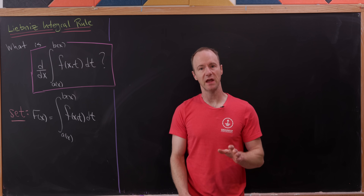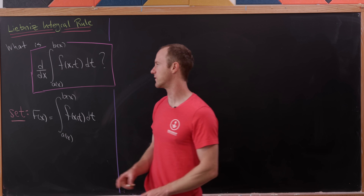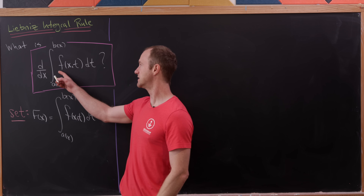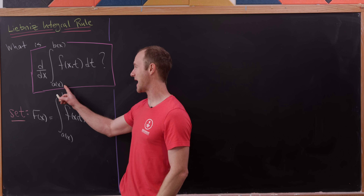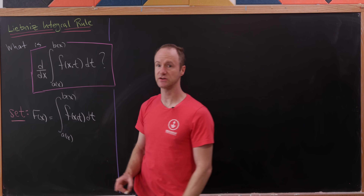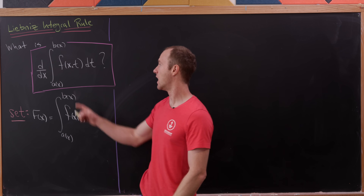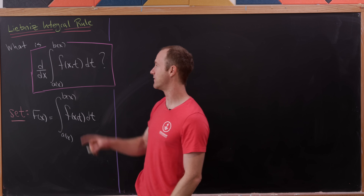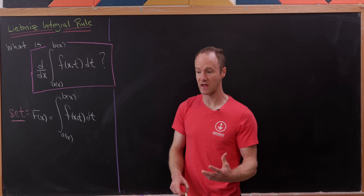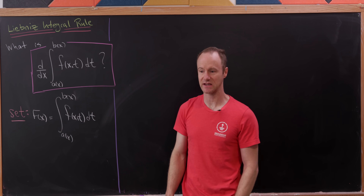In particular, we want to find some formula for the derivative with respect to x of the integral from a(x) to b(x) — so those bounds are functions of x — of f(x, t) dt. So that function inside the integral is a function of both x and t.